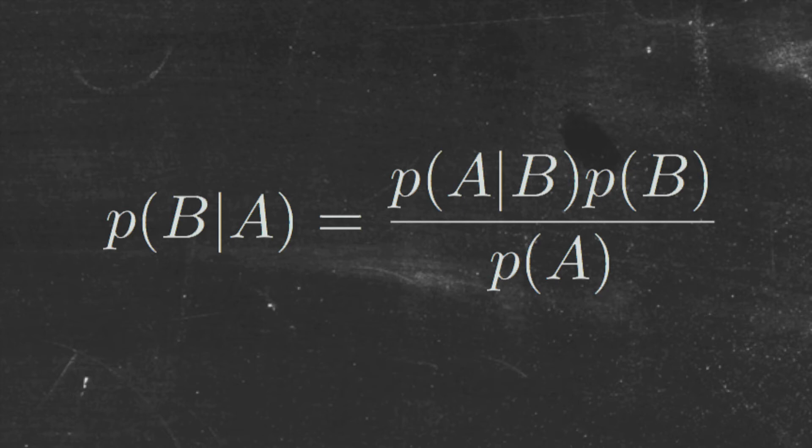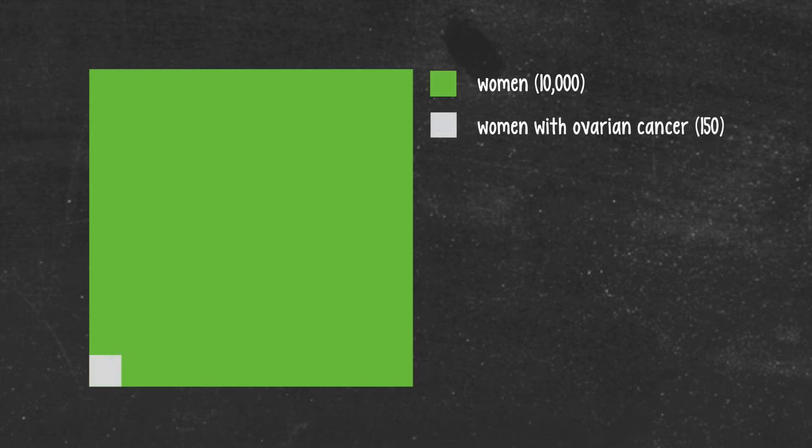To understand Bayes' theorem intuitively, let's consider a hypothetical population of 10,000 women who are getting tested for ovarian cancer using the CA125 test. And we'll represent this population of women with this green square. Now we already know that ovarian cancer affects roughly one and a half percent of the population, so out of these 10,000 women, we would expect about 150 to actually have the disease. We also know that the CA125 test is about 80% accurate in people with the disease, so for those 150 women with the disease, we would expect about 120 positive test results.